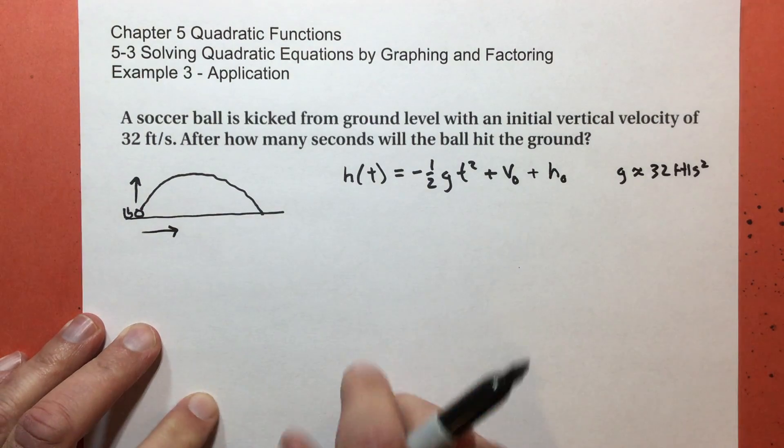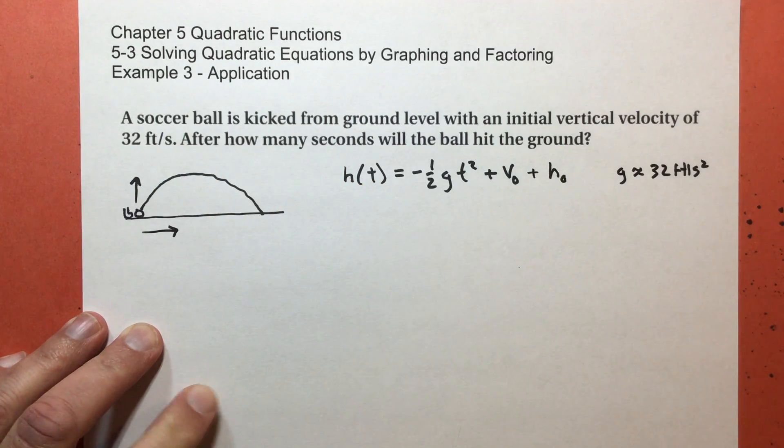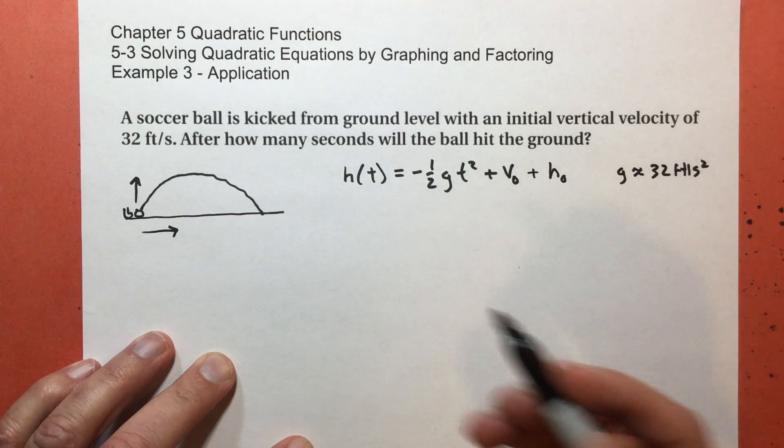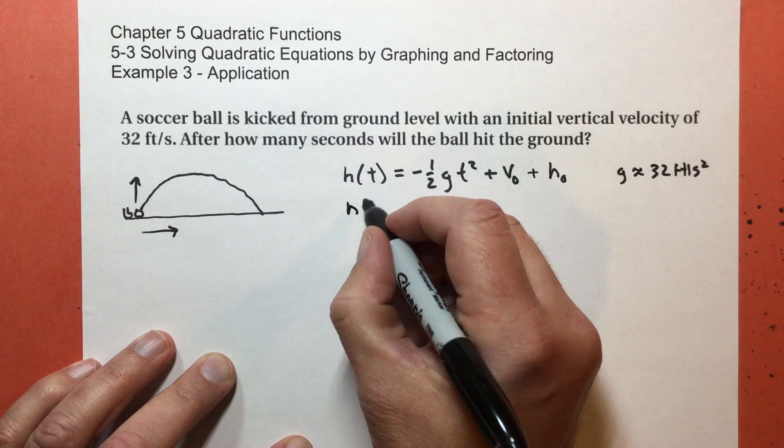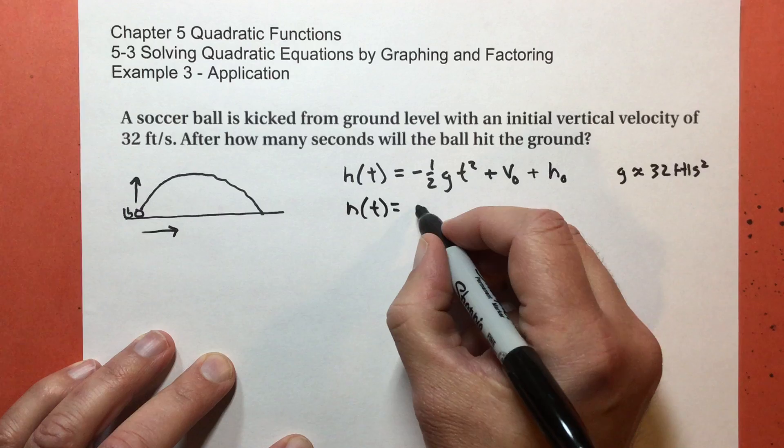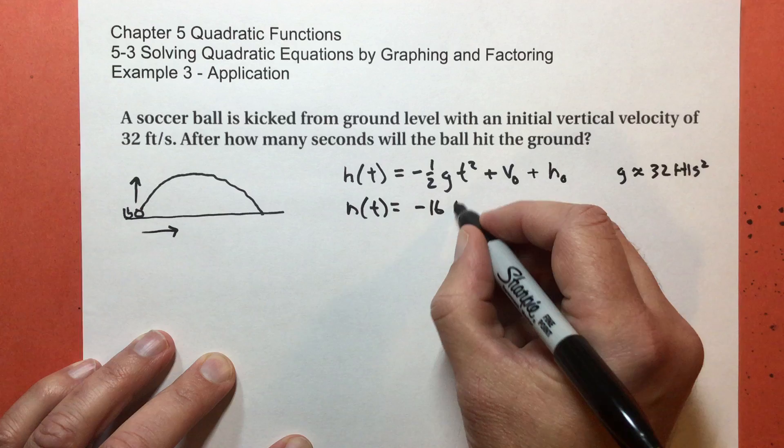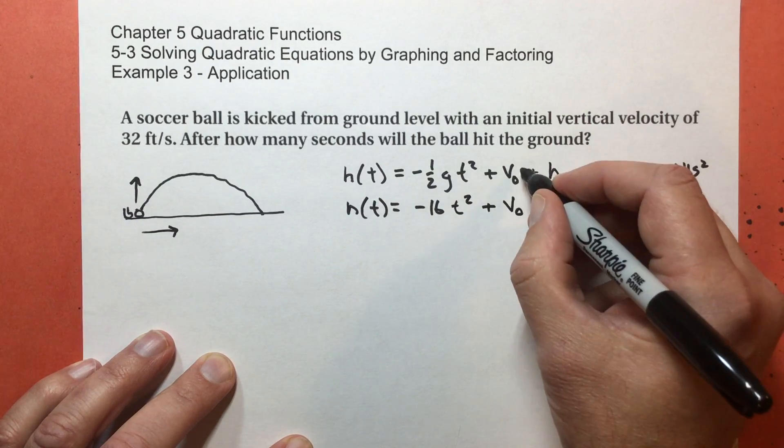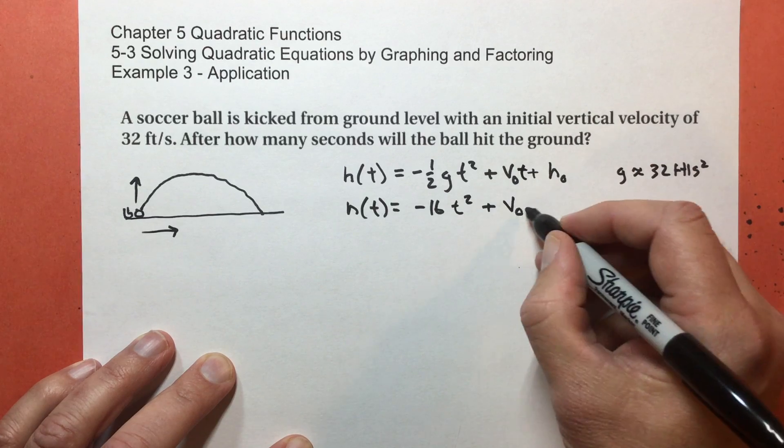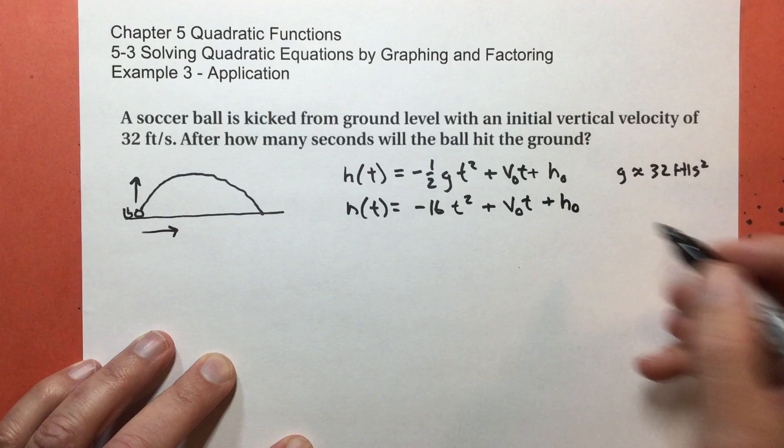But this one, we were given it in feet per second. So we're going to be using the traditional English standard system. So one thing you can do is you can change this to negative 16 because half of 32 is 16. Negative 16 t squared plus the initial velocity times t plus the initial height. That's on Earth.